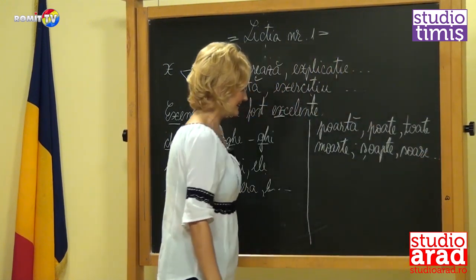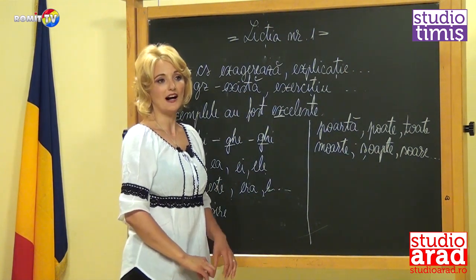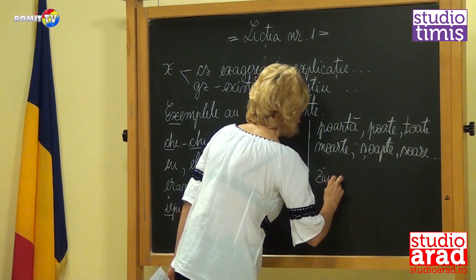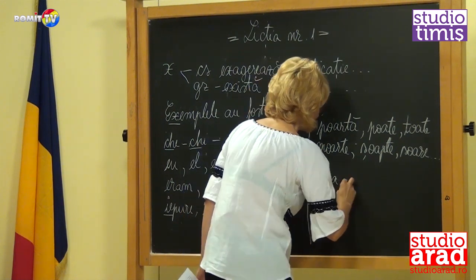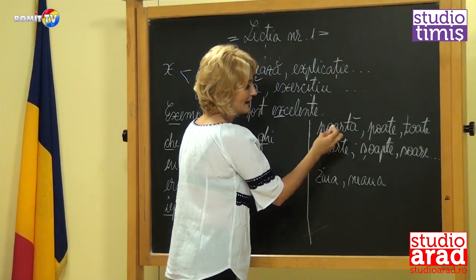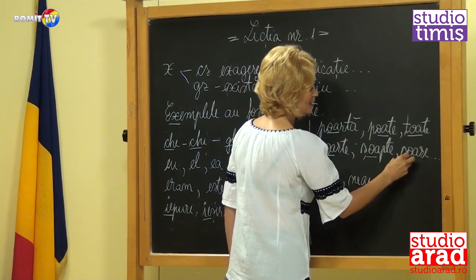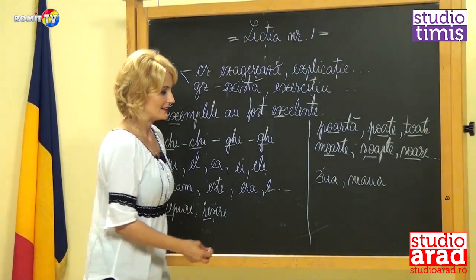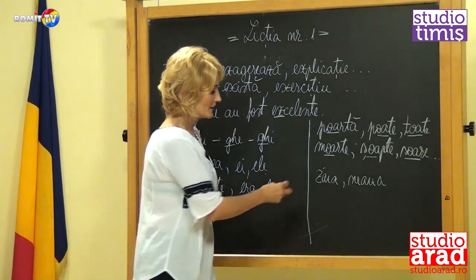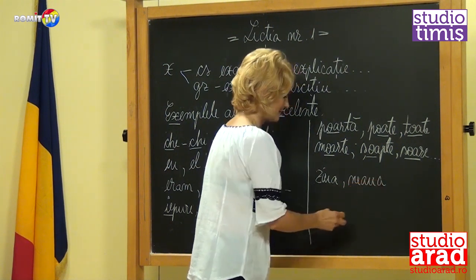And very many others, but here too we must be careful, because the sound group UA also exists — in words like 'ziua' or 'neaua.' So we have 'ua' in poartă, poate, toate, moarte, șoapte, soare, and many others — but let's not forget that the group UA also appears, though less frequently, usually toward the end of words: ziua, neaua.